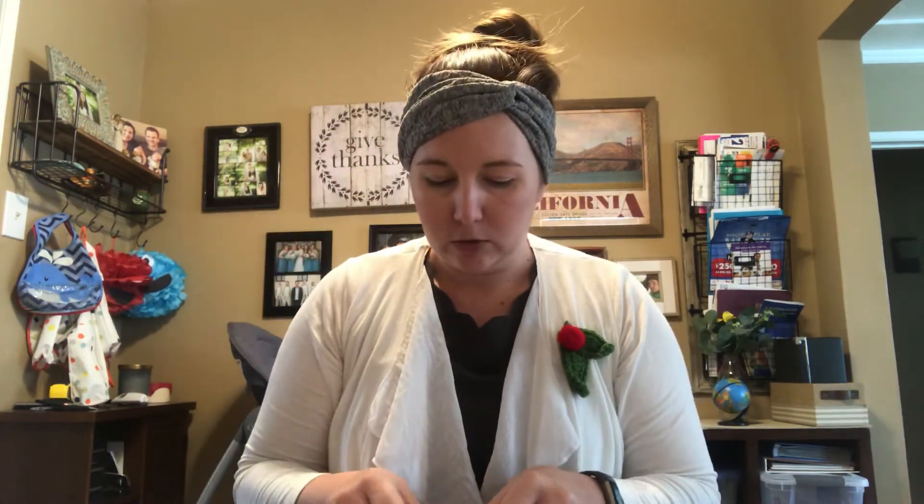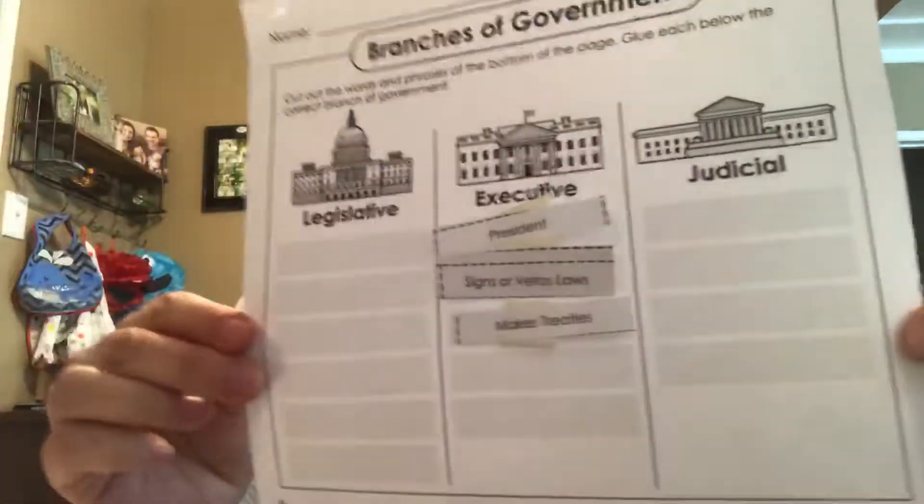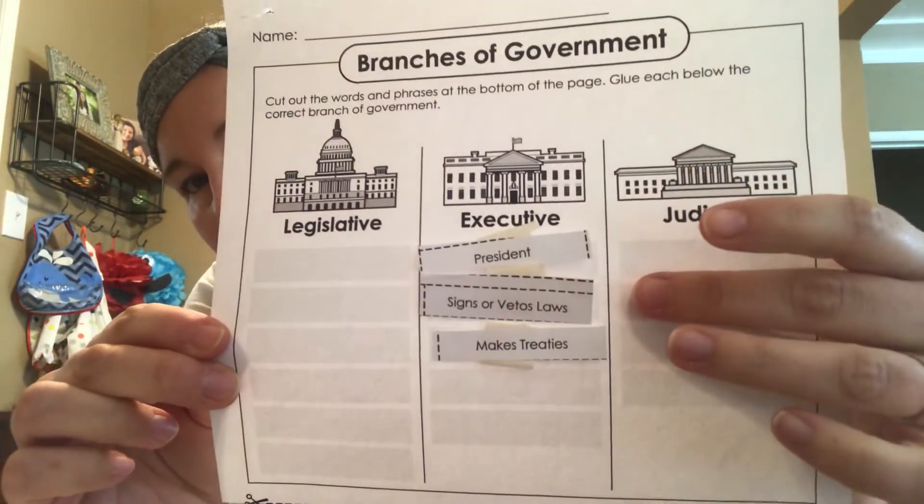Next, let's find 'makes treaties.' We've been learning about different wars like the Revolutionary War, and a treaty is basically what helps end or stop a conflict. A treaty is an agreement between countries or different groups of people to stop fighting, or to say 'I'll do this if you do that.' So 'makes treaties' is another job that goes under the executive branch.